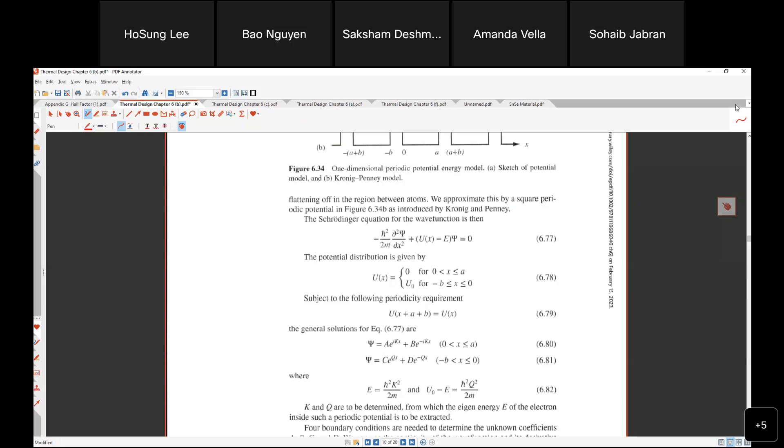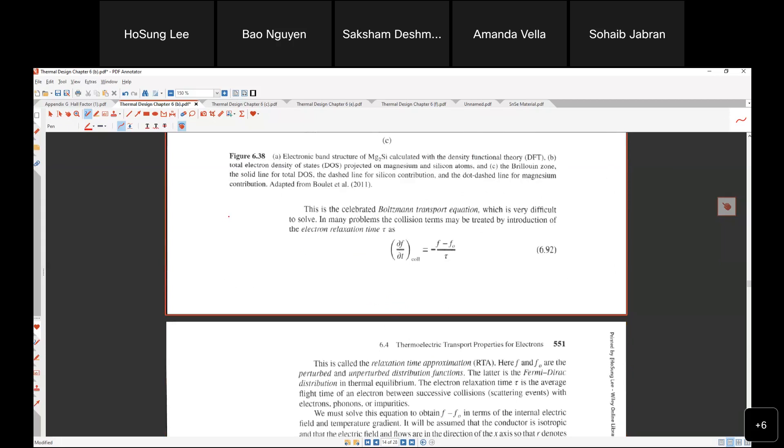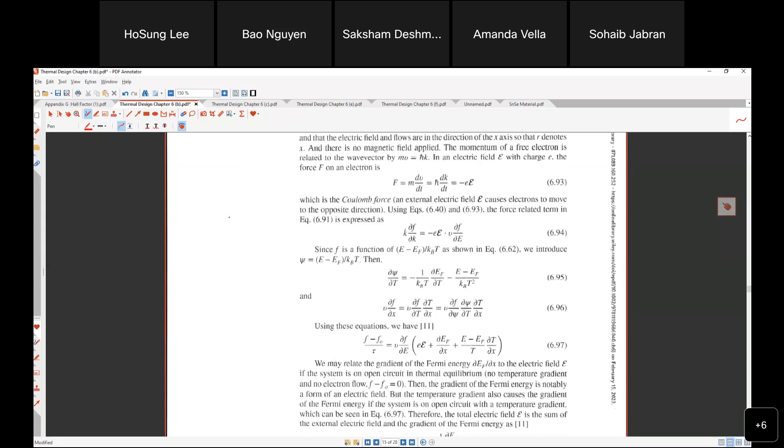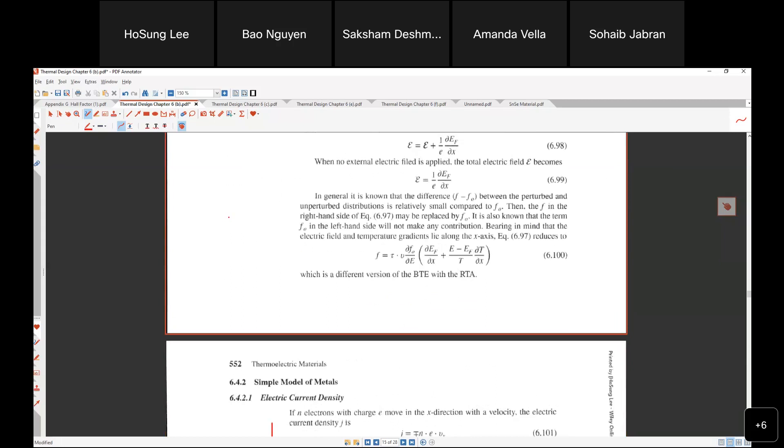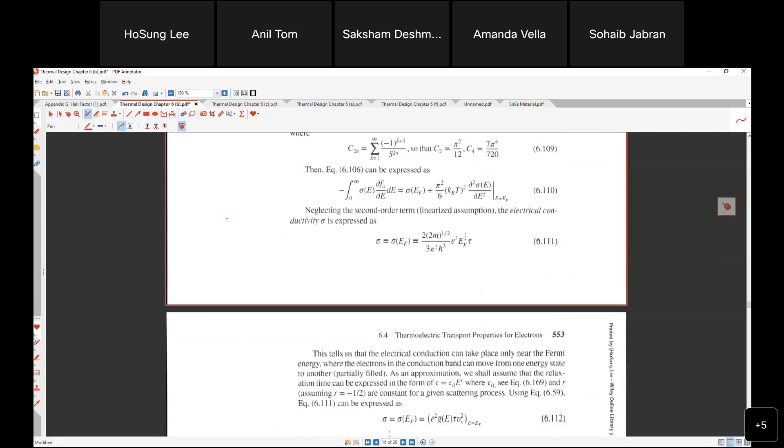Sorry about being a little late. I'm looking at some previous electric transport property for the neutron. I think we discussed ultimate transport equations and electric current and electrical conductivity.